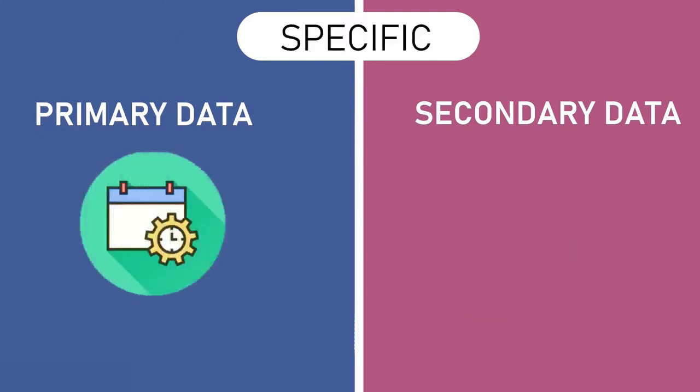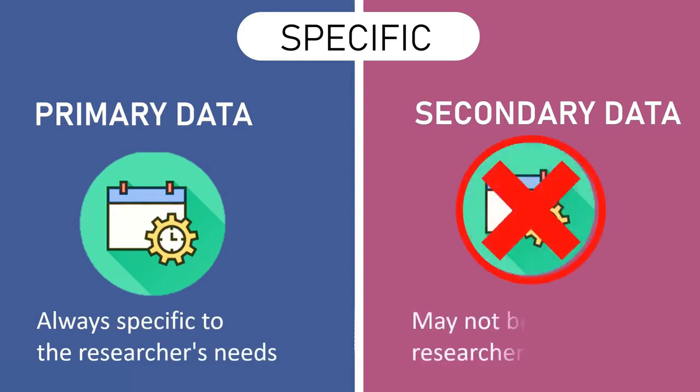Primary data is always specific to the researcher's needs, while secondary data may or may not be specific to the researcher's needs. It depends solely on the kind of data the researcher was able to lay hands on.